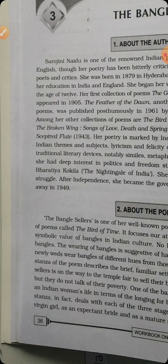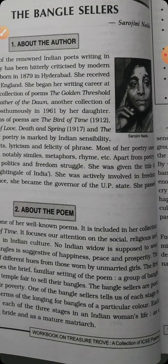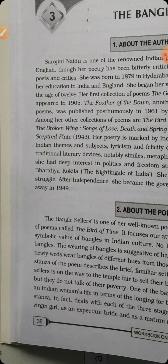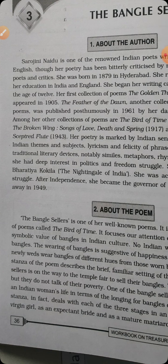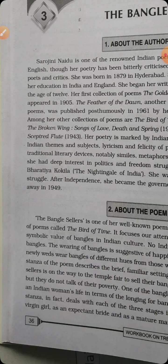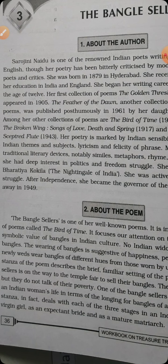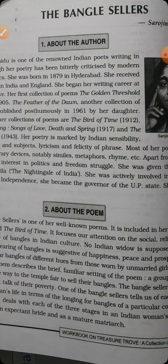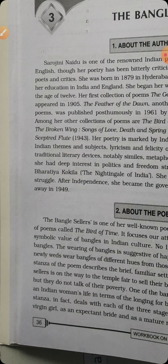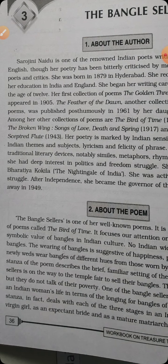The newly-weds wear bangles of different hues — hues means colour — from those worn by unmarried girls. The first stanza describes the familiar setting of the poem: a group of bangle sellers on their way to the temple fair. In each stanza we learn about Indian women's lives in terms of their longing for bangles of a particular colour. Each stanza deals with each of the three stages in an Indian woman's life — as a virgin girl, as an expectant bride, and as a mature matriarch.